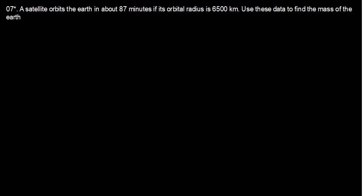The question is: a satellite orbits the Earth in about 87 minutes. If its orbital radius is 6,500 kilometers, use this data to find the mass of the Earth.